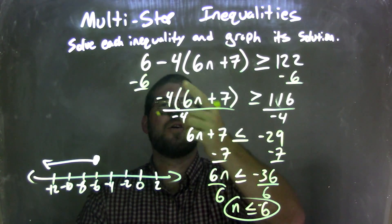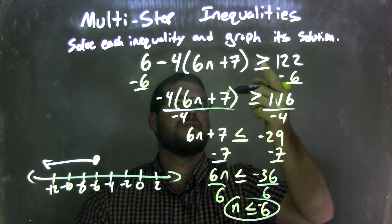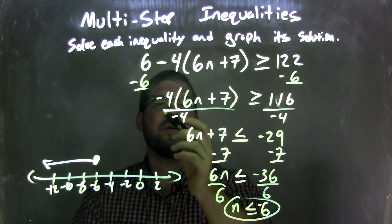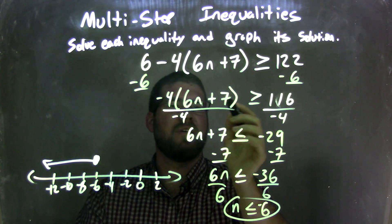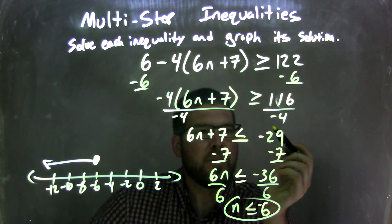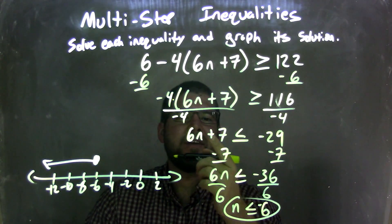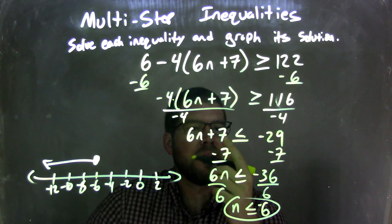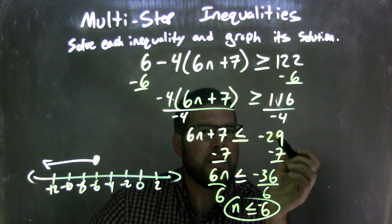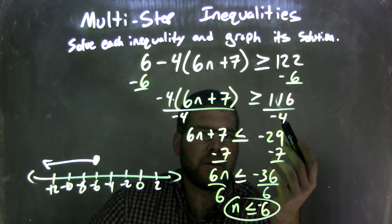So let's recap. I had 6 minus 4 times the quantity 6n plus 7, greater than or equal to 122. I subtracted 6 from both sides, leaving me with negative 4 times the quantity 6n plus 7, greater than or equal to 116. Then I divided by negative 4 on both sides, leaving me with 6n plus 7 on the left and negative 29 on the right — because 116 divided by negative 4 is negative 29. But I flipped my inequality because I divided by a negative.